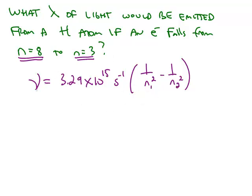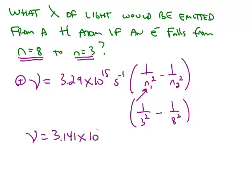So if we want to calculate this and get a positive frequency, we would substitute in the smaller value of n in this denominator. So this would be 1/9 minus 1/64. And this calculates out to 3.141 times 10 to the 14th Hertz.